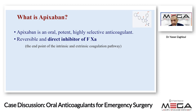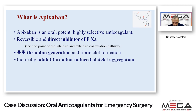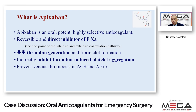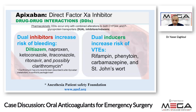The main problem is apixaban, which is a potent, highly selective anticoagulant. Its main action is direct inhibition of activated factor Xa, which is the endpoint of both intrinsic and extrinsic coagulation pathways. It also reduces thrombin generation and inhibits thrombin-induced platelet aggregation — three effects from this medication. Its most common uses are prevention of thrombosis in acute coronary syndrome and atrial fibrillation. We must also consider drug interactions: dual inhibitors can increase bleeding risk by competing at the same metabolic site, the cytochrome P450 3A4 pathway, increasing plasma levels of apixaban.